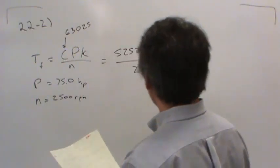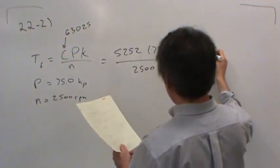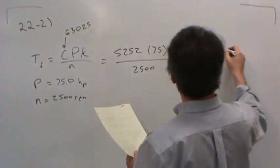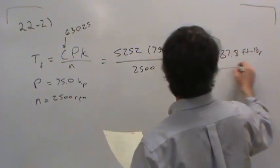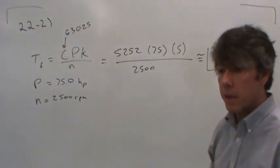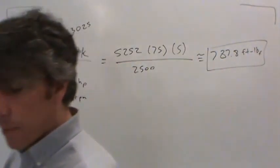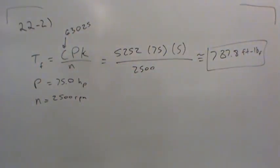Okay? When you plug all this into your calculator, you find that the frictional torque rating is about 787.8 foot pounds force. And that's it. We're done with that problem. That's what's nice about the problems in this chapter. They're all usually pretty quick and easy.